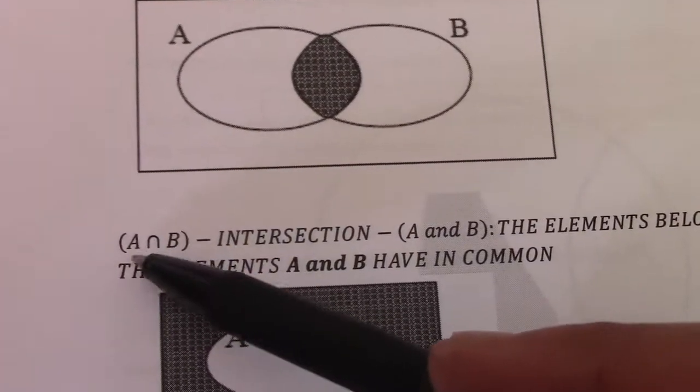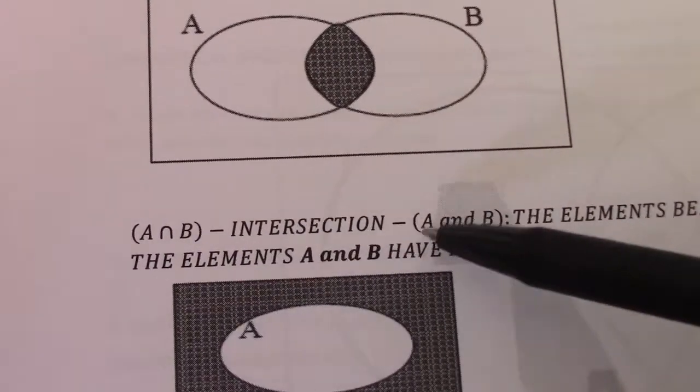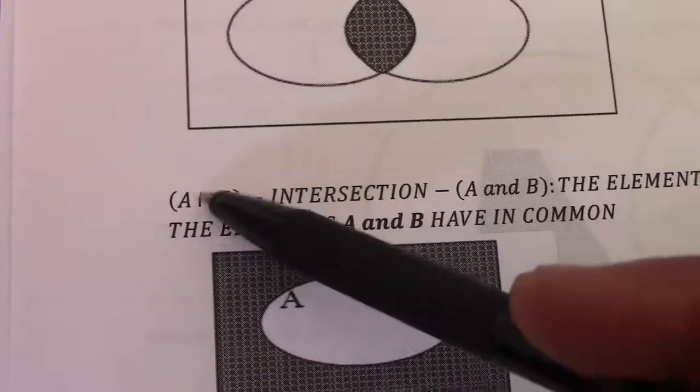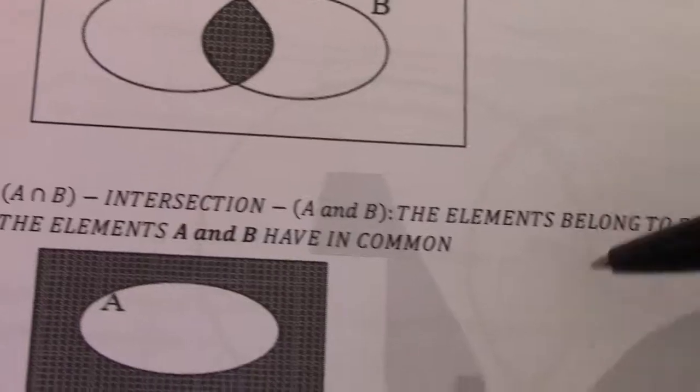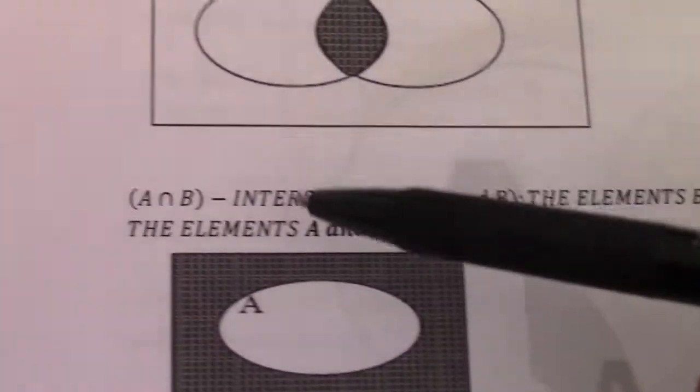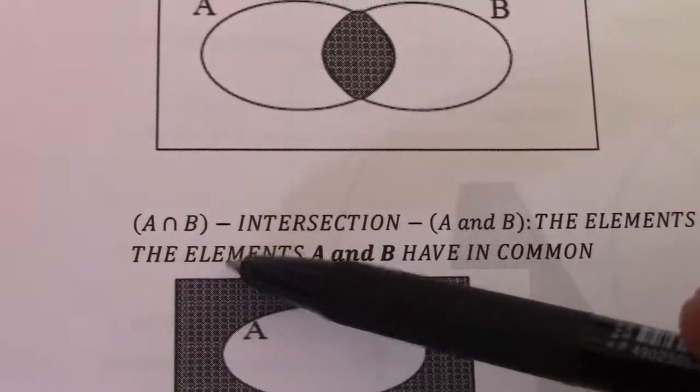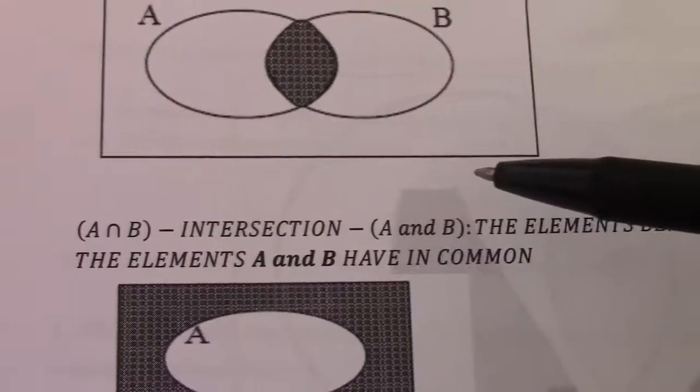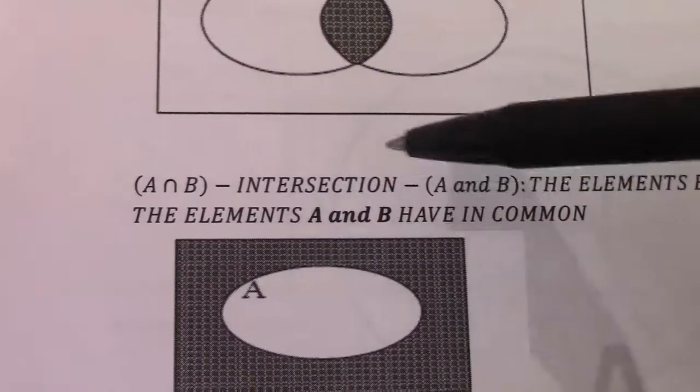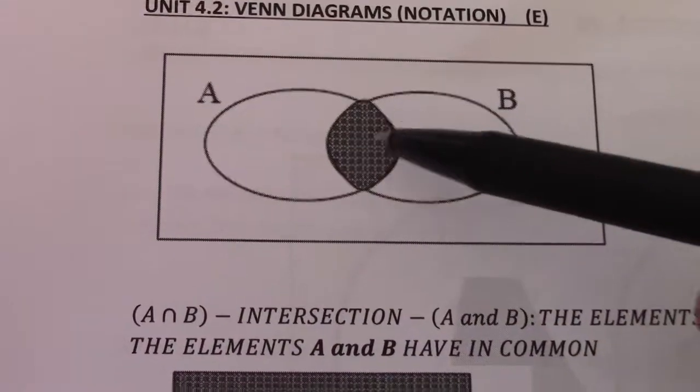That sign there, intersection, can also be pronounced as A and B, so you can say A and B. The elements belong to both A and B. So the elements that A and B have in common are in that intersection.